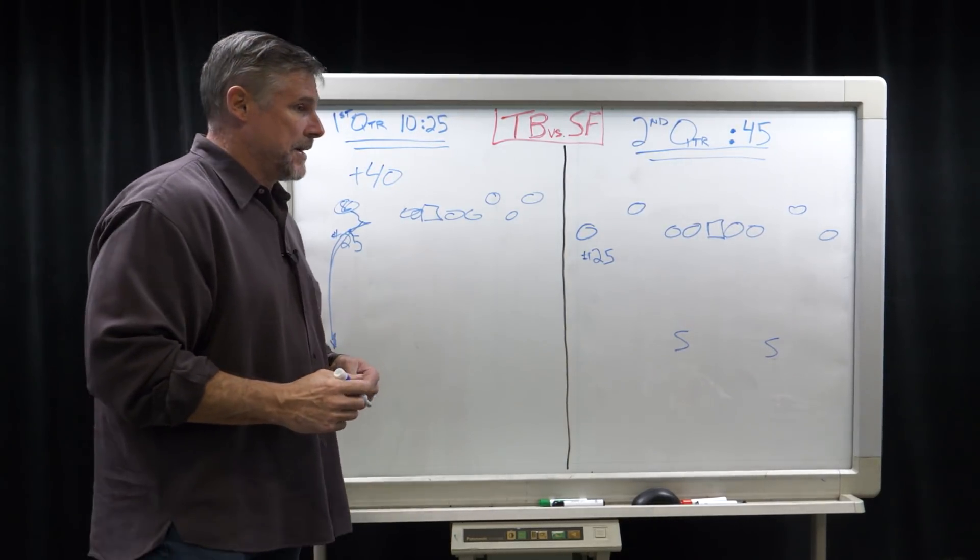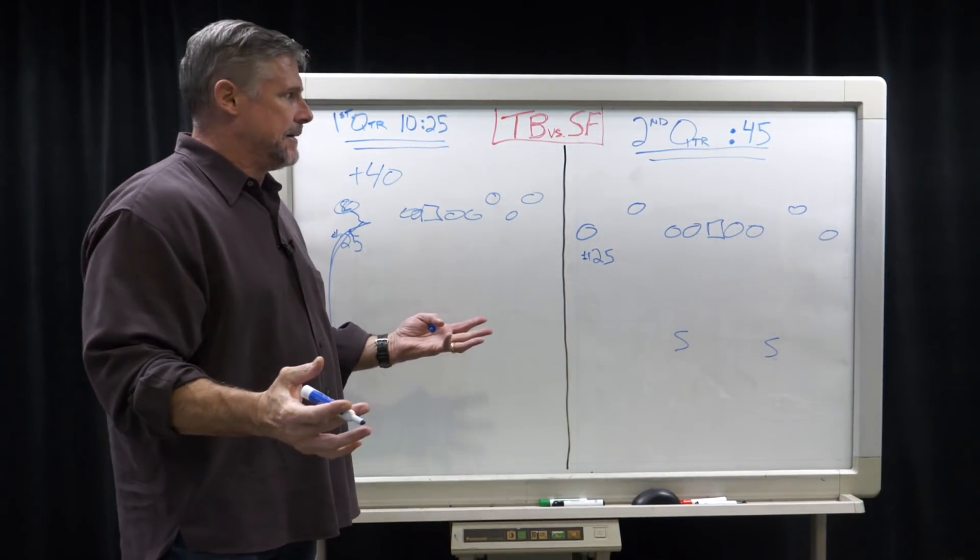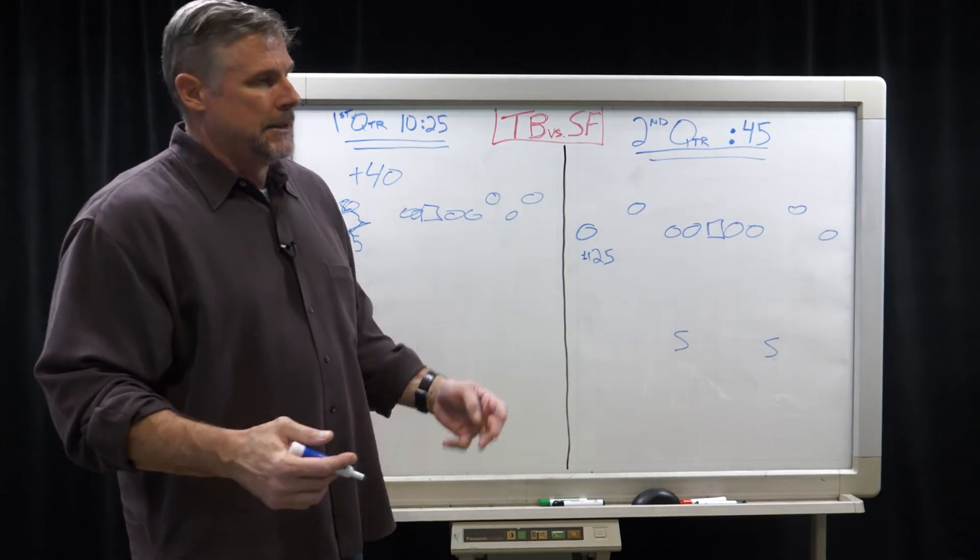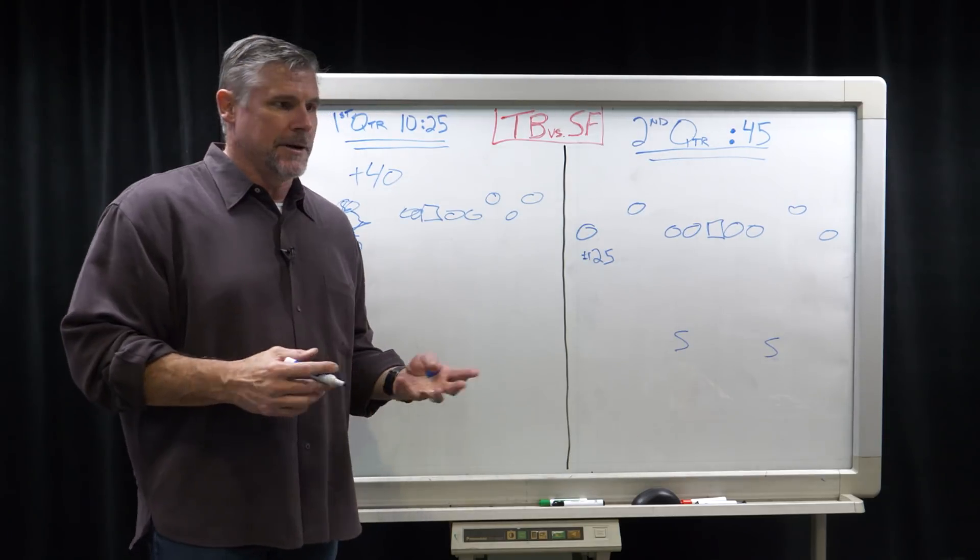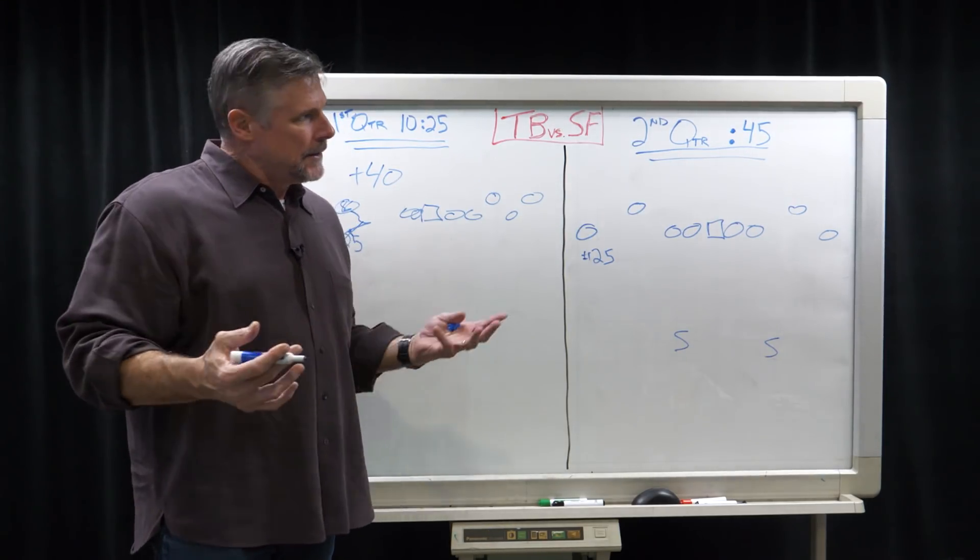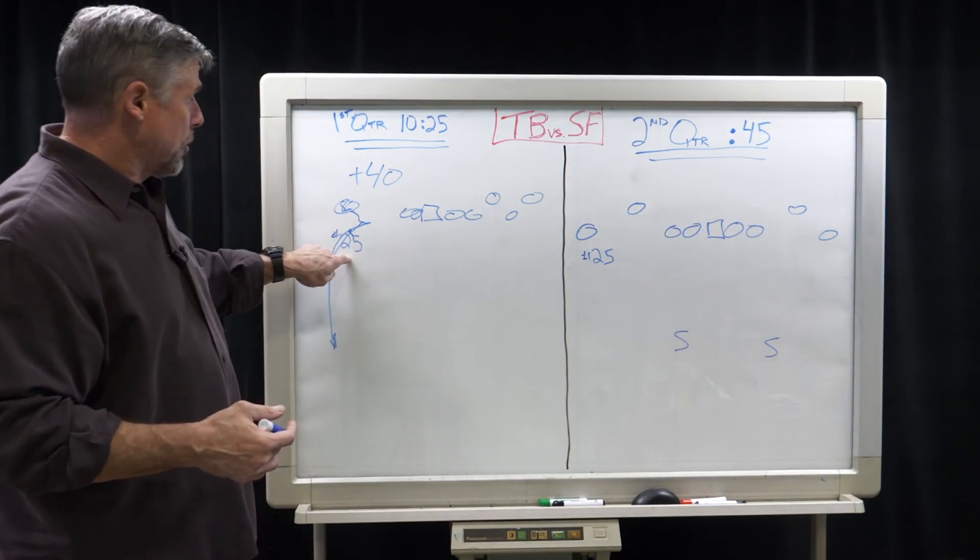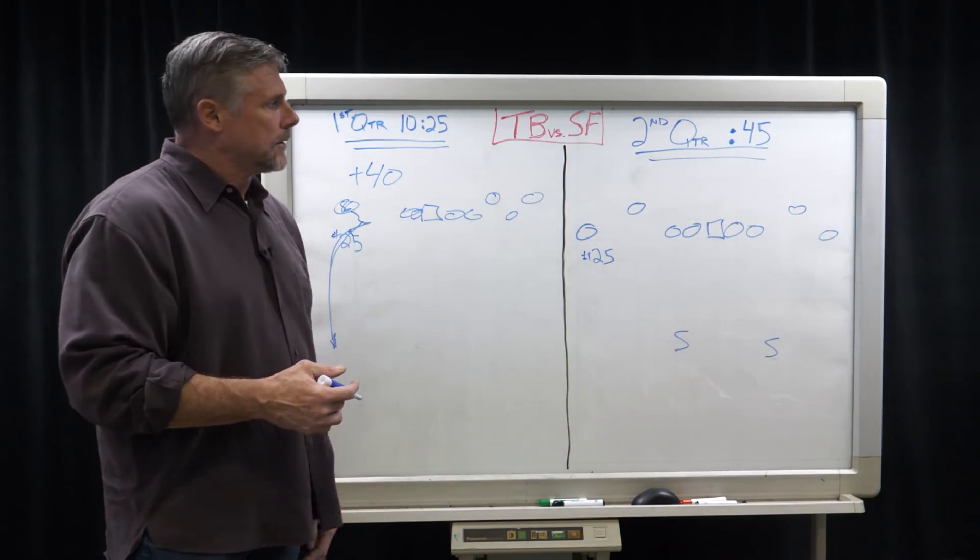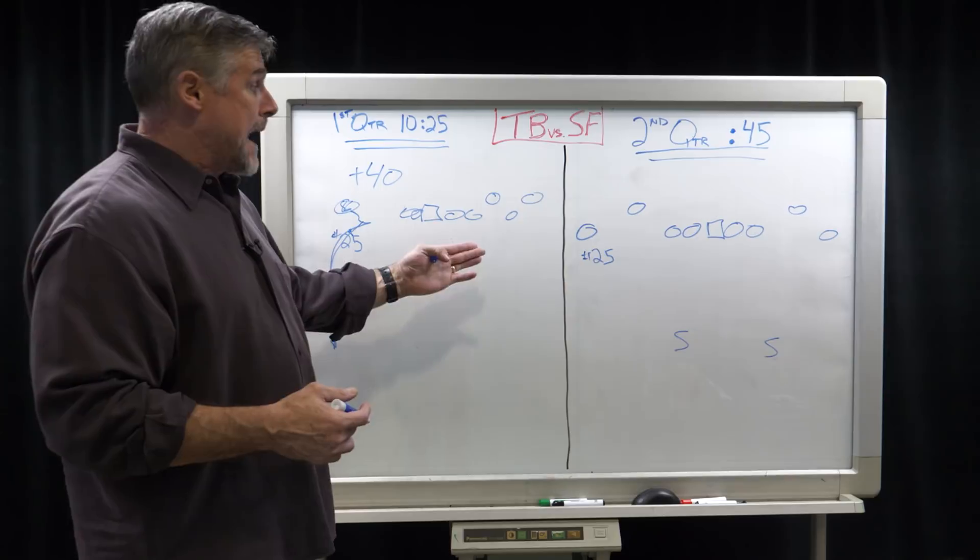I know that, look, DBs get beat all the time. I know a lot of people are worried about Shaquill Griffin right now. On a couple of those plays, yeah, he can do better, but on a couple of them he had his arm in there and it's tough. It's tough playing corner. This is the second hardest position in the NFL next to quarterback. So you're out on an island.